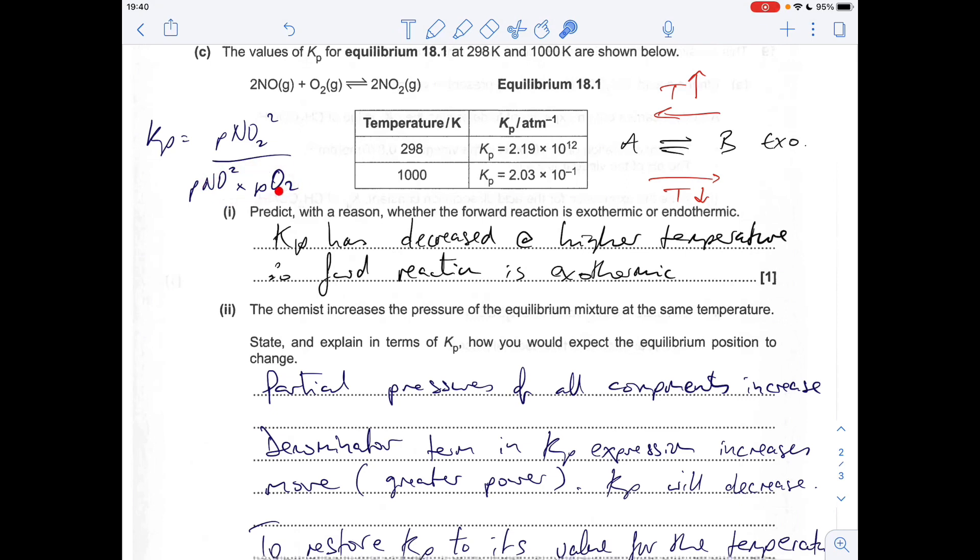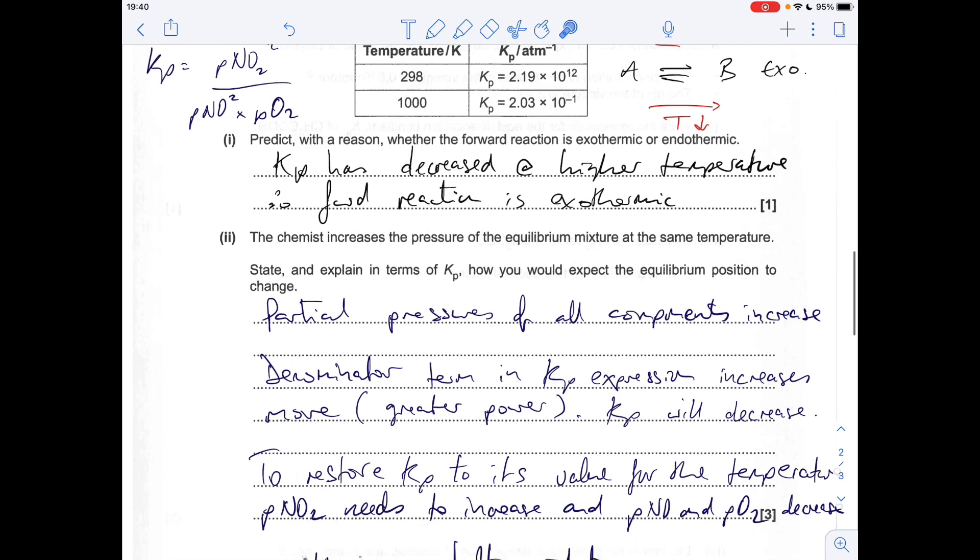What that will do is knock it out of equilibrium because it will make Kp go down a little bit, as the denominator has got bigger. So to get back to equilibrium, in other words to restore Kp—it's really important that we say that.